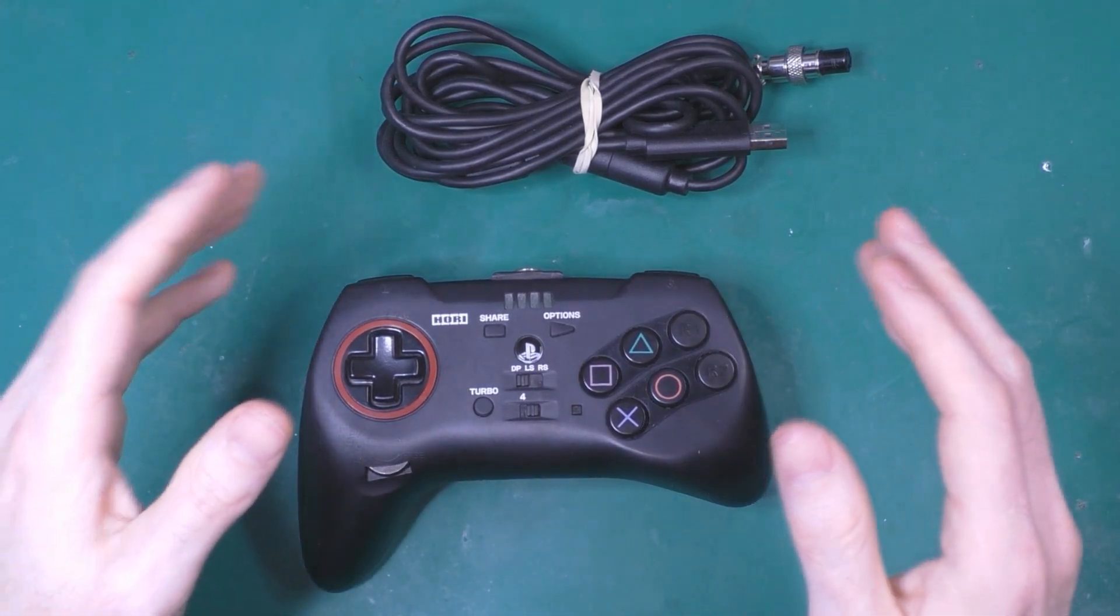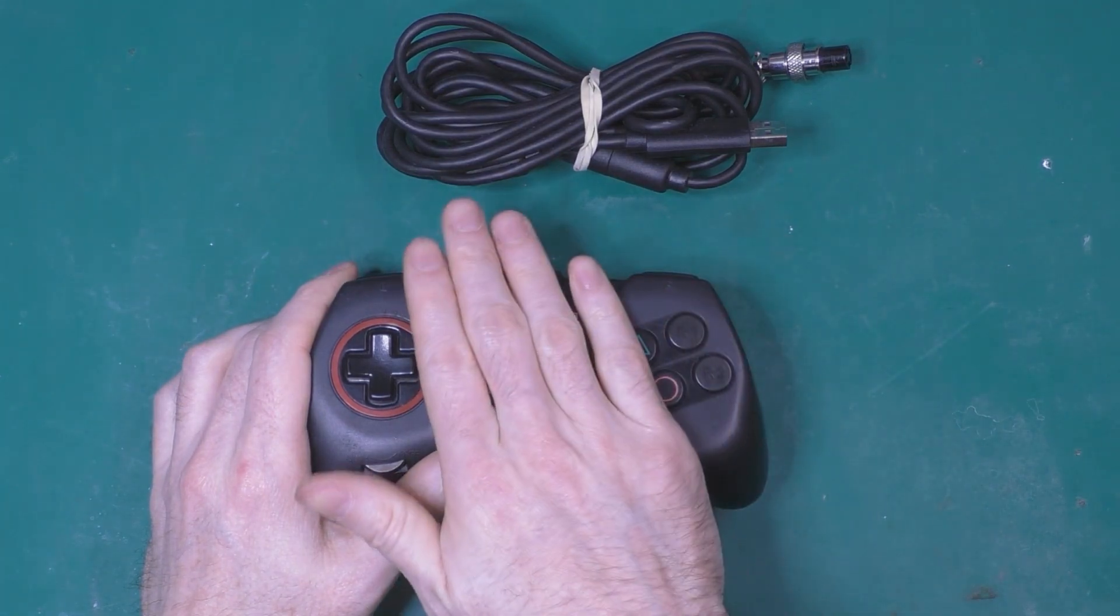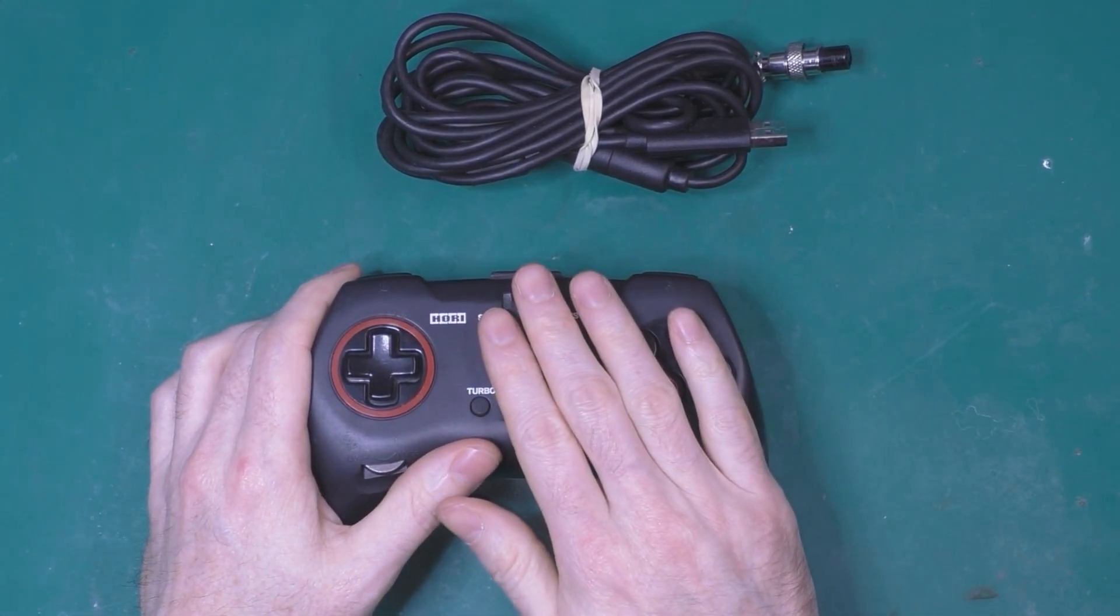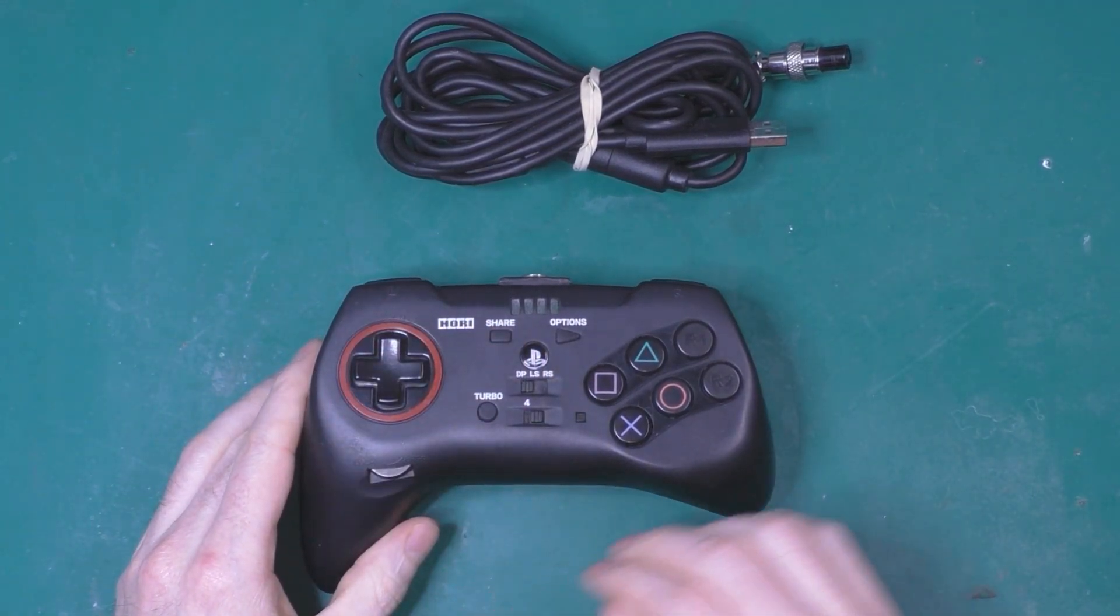Hey everyone, this is part 2 of the modification of the Hori Fighting Commander 4. Last time we saw everything on the electronic and on the button. Now we're going to see the D-pad.